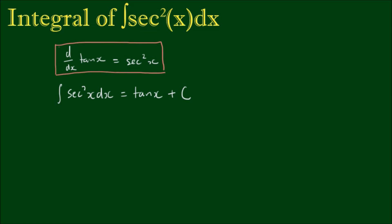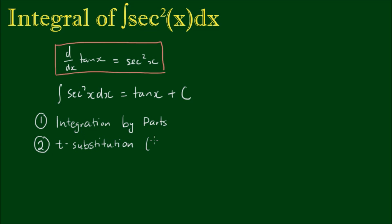Let's explore two of the more conventional ways of integration. The first approach is centred around integration by parts, and the second approach will use a t-substitution, where t is equal to tan(x/2).